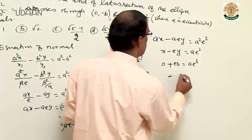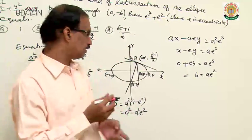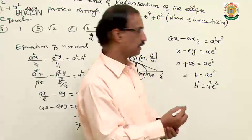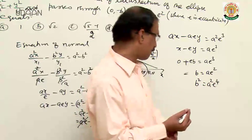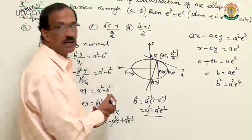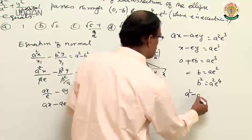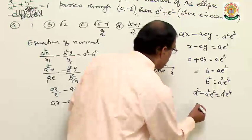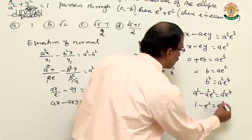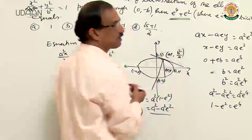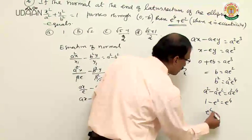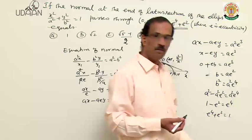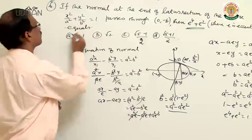From b = ae², squaring: b² = a²e⁴. But b² = a²(1-e²), so a²(1-e²) = a²e⁴. Cancelling a²: 1 - e² = e⁴, which gives e⁴ + e² = 1. So the value of e⁴ + e² = 1, and option A is correct.